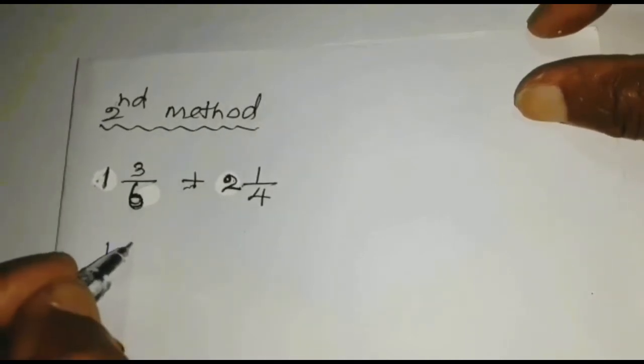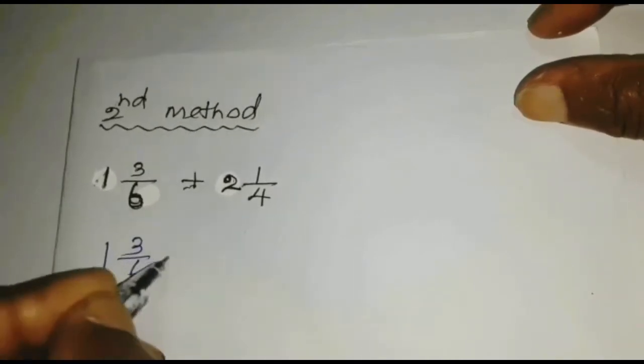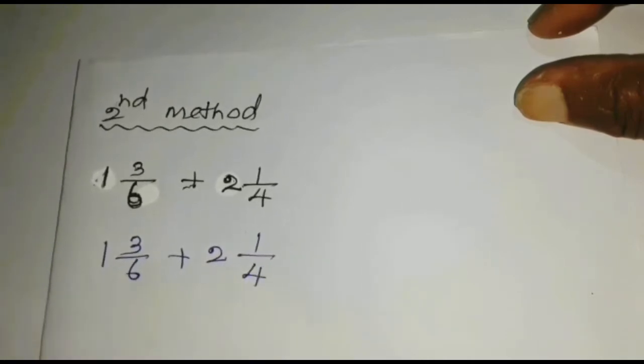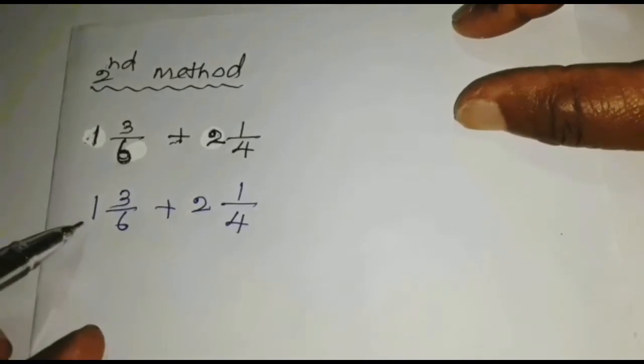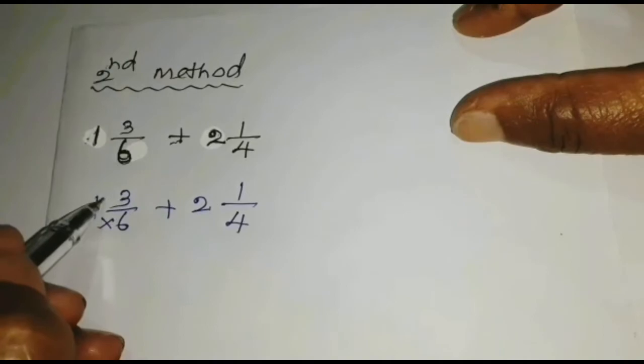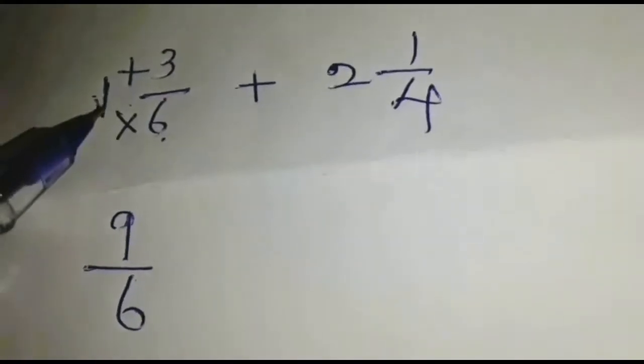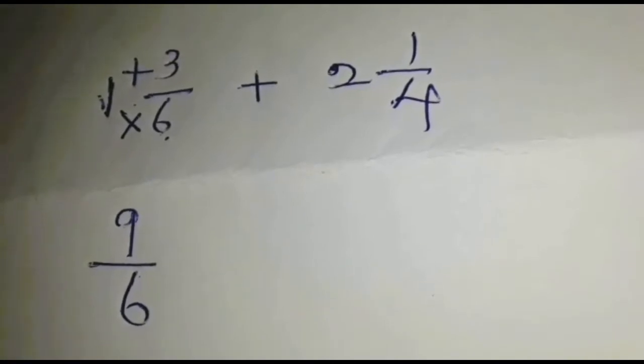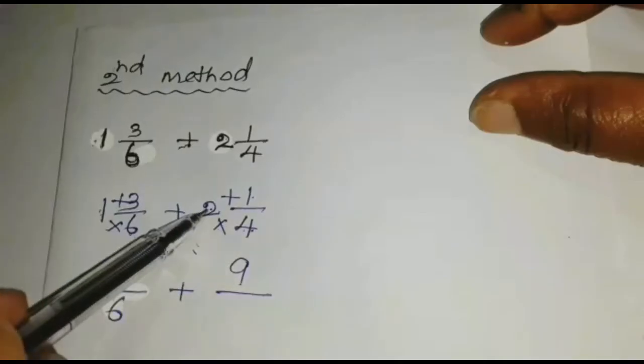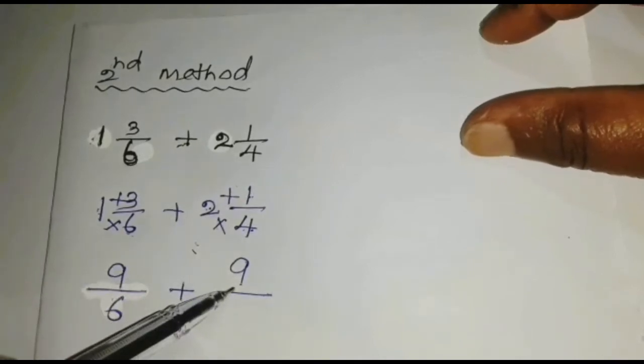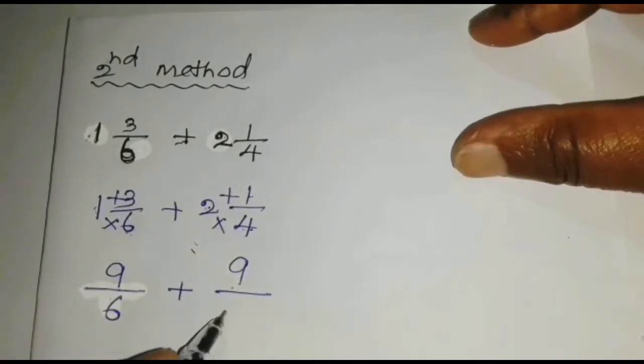1 3/6 plus 2 1/4. To convert these mixed numbers into improper, we have to multiply these two and add. 6 into 1 is 6. 6 plus 3 is 9. Denominator is 6. 4 into 2 is 8. Plus 1 is 9. Numerator is 9. Denominator is 4.